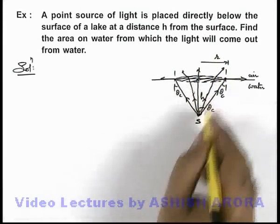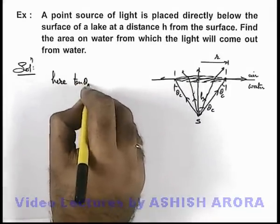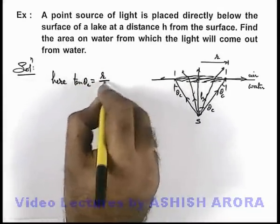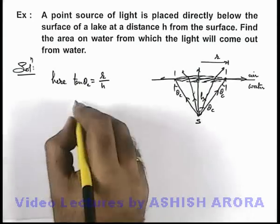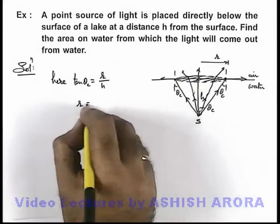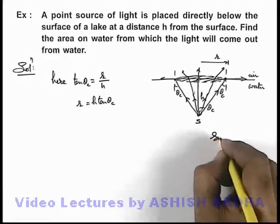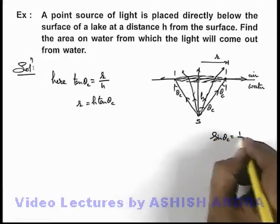Here we can write down in this particular triangle, tan theta c will be equal to r by h. So in this situation the radius of the circular patch through which the light is coming out will be h tan theta c, and we know the value of sine theta c is 1 by mu.